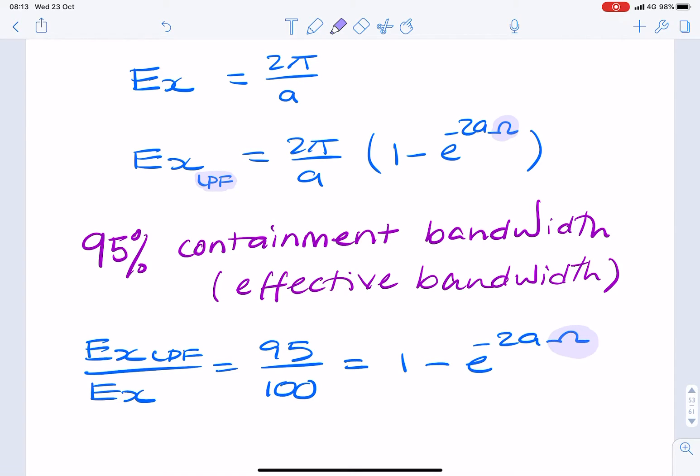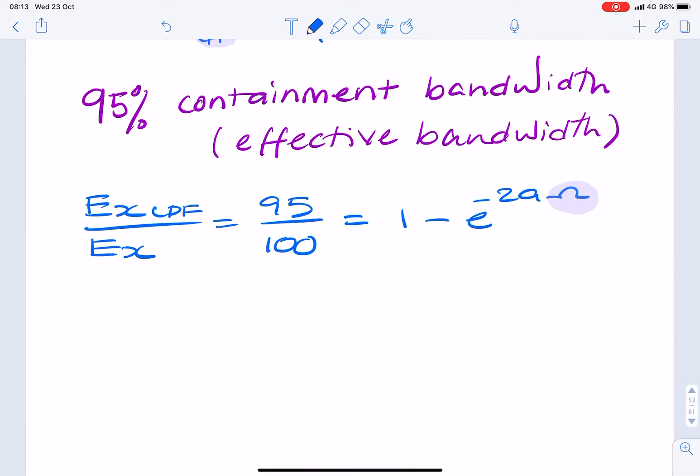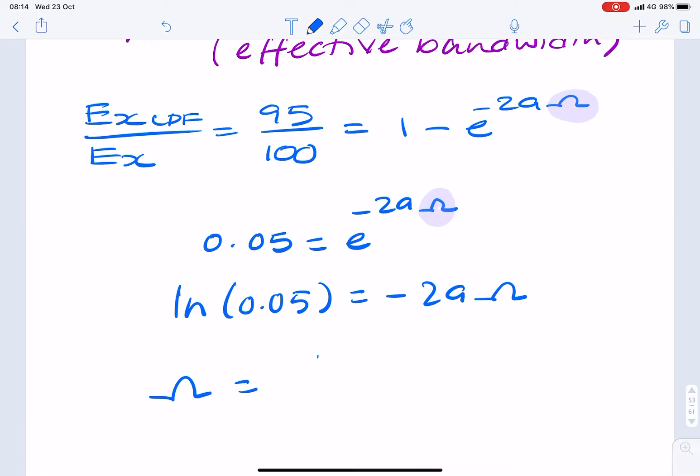So now it's just a case of finding omega. It's a little bit of mathematical manipulation. You've got 0.95 take away 1, that's 0.05 equals e to the minus 2a omega. Remember, we're after the value of omega. So take logs of both sides. Natural log of 0.05 equals minus 2a omega. Omega equals log 0.05 divided by minus 2a.